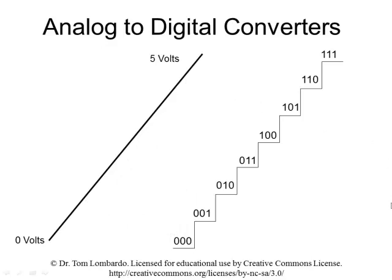Computers are digital. They don't know what to do with analog voltages, so we have to find out how to take an analog voltage and what we call digitizing it — converting it into a number so the computer can deal with it.